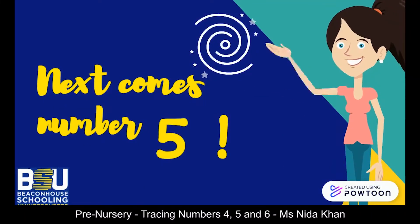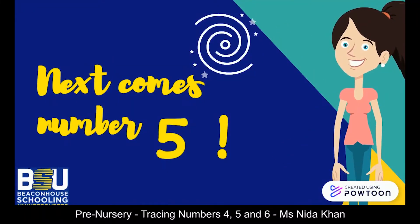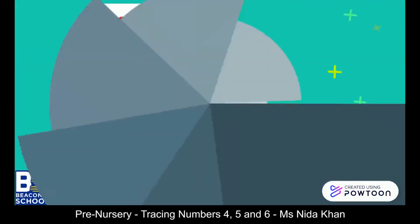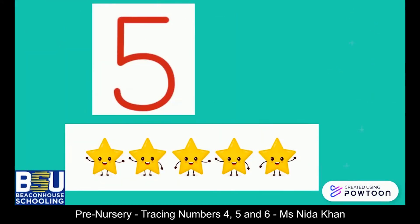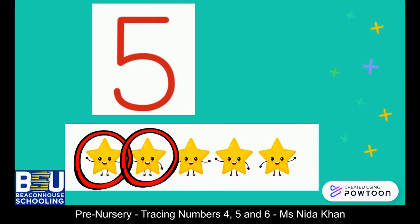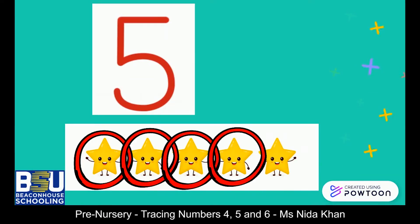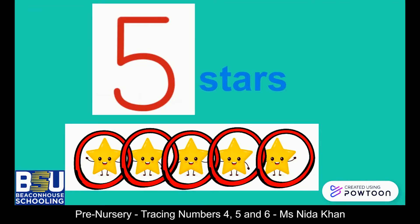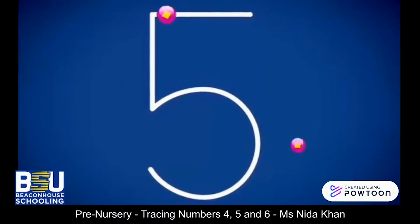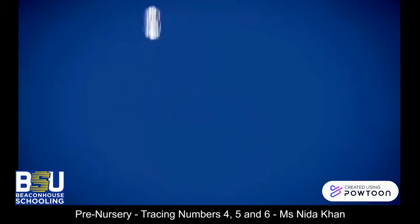You guessed right — next comes number five! Now let's count with me: one, two, three, four, five. There are five stars! Now let's learn to form number five. Start from the top, go down straight, then make a curve all the way around.